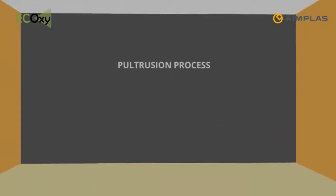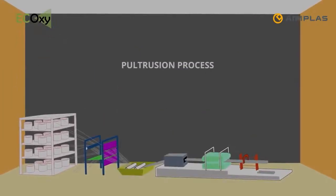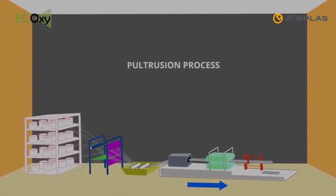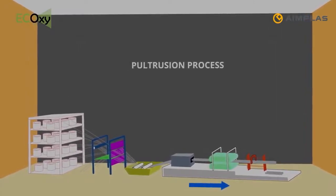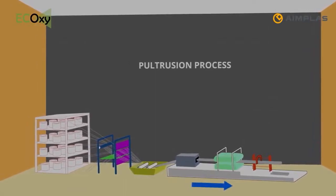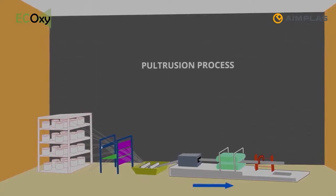We also collaborate in the validation of 3R resins with the construction sector by manufacturing pultrusion profiles for windows with natural fibers and glass fibers by the pultrusion process. The pultrusion process is used to obtain solid or hollow parts with a constant section, replacing traditional materials such as steel, concrete, or wood.